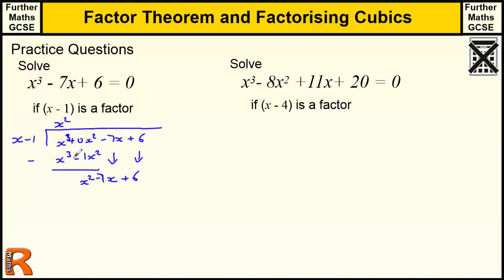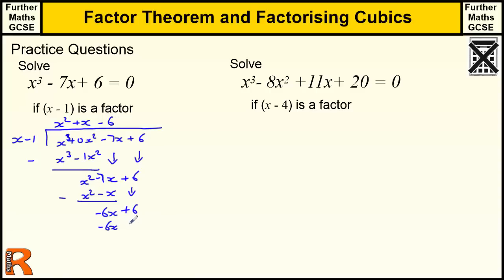What do I multiply x by to get x²? That's just x. x times x is x², and x times minus 1 is minus x. Subtract those — x² disappears. Then minus 7x minus minus x is minus 6x. Bring down plus 6. What do I multiply x by to get minus 6x? That's minus 6. Minus 6 times x is minus 6x, and minus 6 times minus 1 is plus 6. So we get x minus 1 times x² plus x minus 6 equals 0.